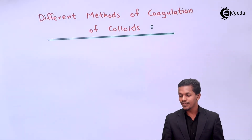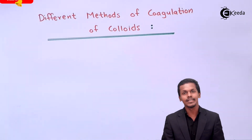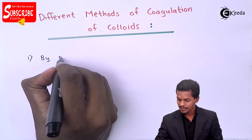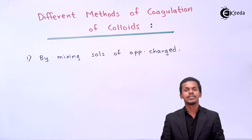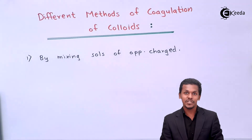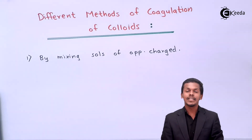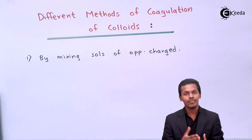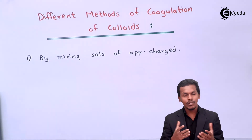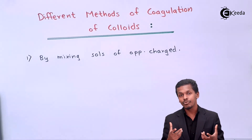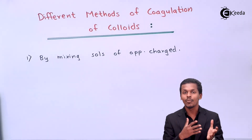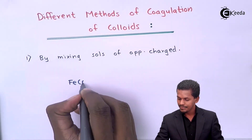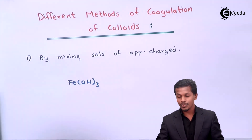Talking about the different methods of coagulation of colloids. The first method of coagulation is by mixing sols of opposite charge. We know that colloidal particles can be of positive charge or negative charge. So whenever we mix two different sols that both have opposite charges — for example, if we consider Fe(OH)₃, which is considered to be a positive sol.